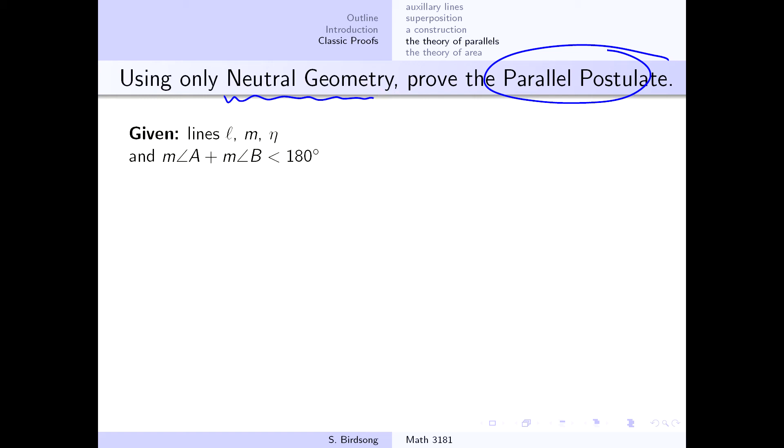and we're only allowed to use the first four postulates that we currently have, any common notions that we currently have, and the propositions 1 through 28 plus Playfair's axiom.